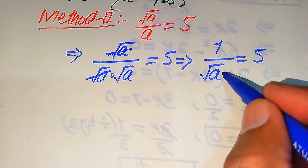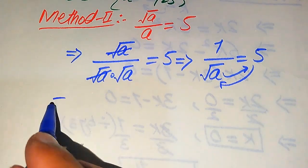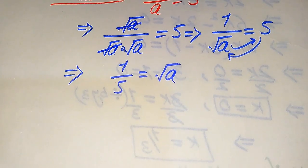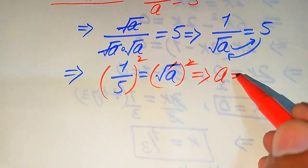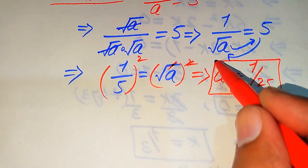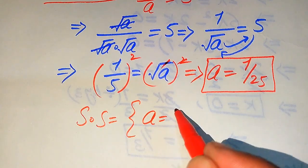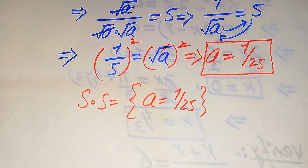To find the values of a, we move square root of a to the right-hand side and 5 to the left-hand side. Interchanging gives 1 over 5 equals square root of a. Squaring both sides removes the square root, and we get a equals 1 squared over 5 squared, which is 1 over 25. We already verified in the first method that this value satisfies the given equation. So the solution set is a equals 1 over 25. Thank you so much for watching — please subscribe to my channel for more videos.